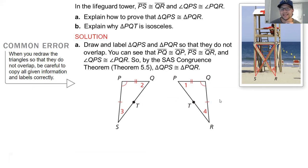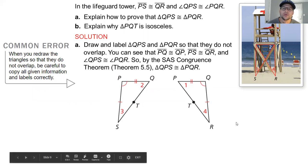So based on the side angle side theorem, you're given two sides that are congruent and the included angle, you can conclude that the two triangles are congruent.